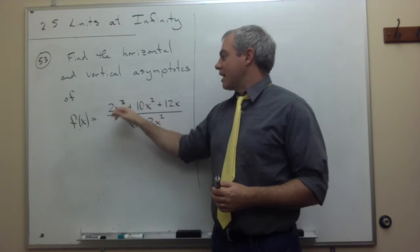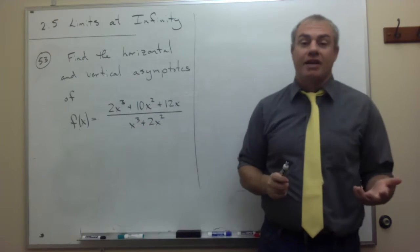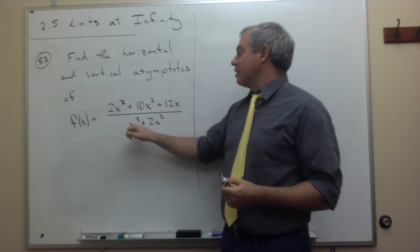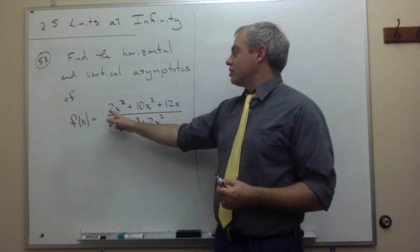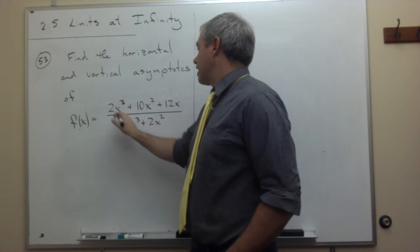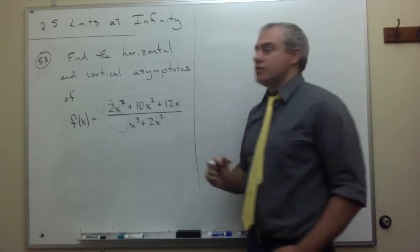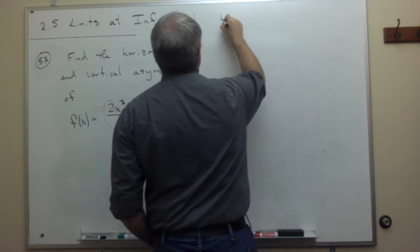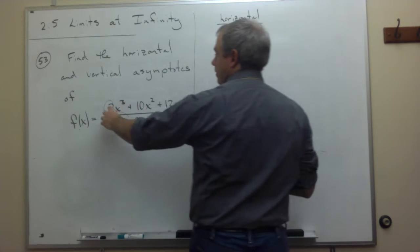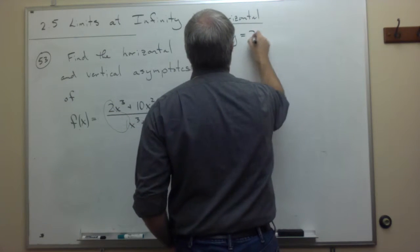The highest power on the top is x cubed, the highest power on the bottom is x cubed, so I could divide the top and bottom by x cubed. But what I also see is that the highest power on the top and the bottom are the same, so if I wanted to, I could just take the coefficients attached to those x cubed terms. On top I have a 2, on bottom I have a 1, so my horizontal asymptote is just going to be at 2 over 1, or 2, and so that's going to be y equals 2.